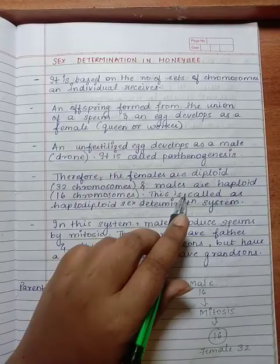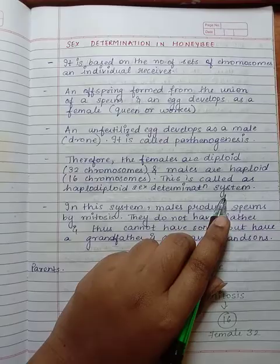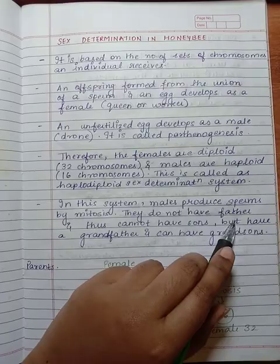In this system, males produce sperms by mitosis. They do not have a father and thus cannot have sons, but have a grandfather and can have grandsons.